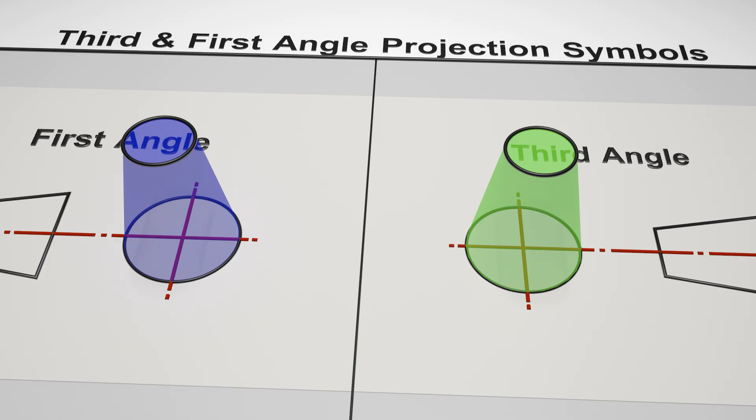Now, in both symbols, the truncated cone starts in the plan or top view, whichever you prefer to call it, facing towards you.